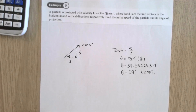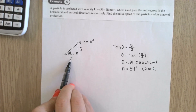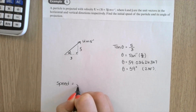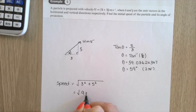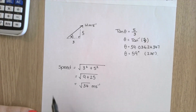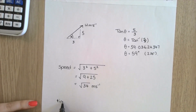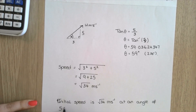Find the initial speed: the speed is the magnitude of the velocity vector, so speed = √(3² + 5²) = √(9 + 25) = √34. Keeping it in exact form, the initial speed is √34 metres per second at an angle of 59 degrees above the horizontal.